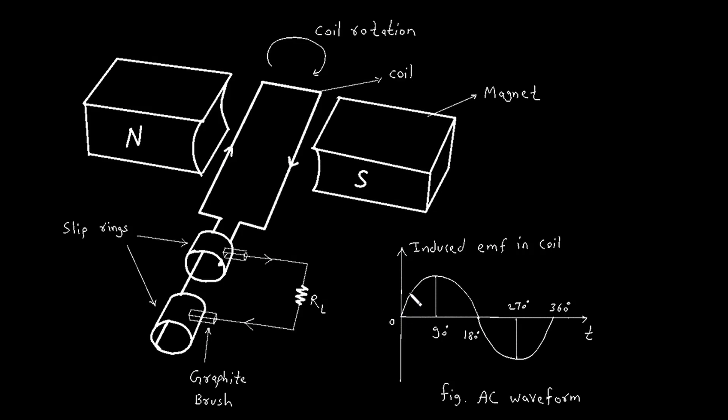As the coil starts rotating, it cuts through more and more magnetic field lines, increasing the flux linkage. This change in flux linkage induces an EMF in the coil.